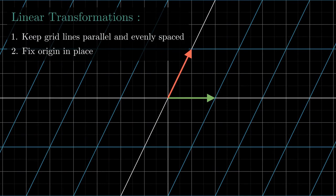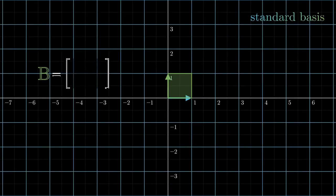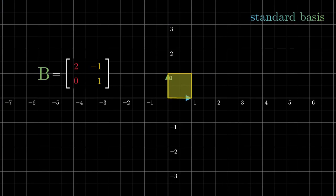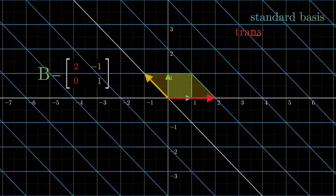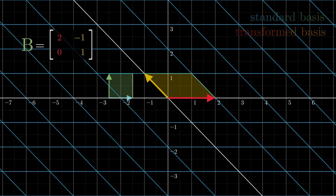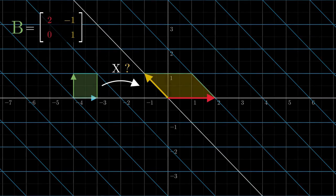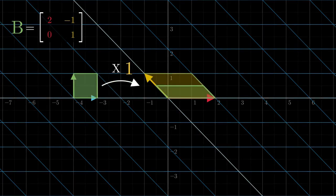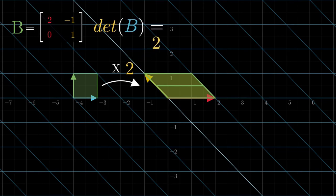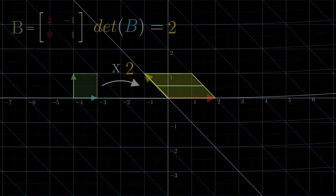Now consider another matrix B with columns [2, 0] and [-1, 1], representing a transformation that takes i-hat over to the coordinates (2, 0) and j-hat over to the coordinates (-1, 1). Again, by comparing the area spanned by the standard basis and that of the transformed basis, we see that transformation B scales areas, but this time the factor by which the areas get scaled is 2, meaning the transformation represented by B has a determinant of 2. Remember that this factor 2 applies to the entire vector space.